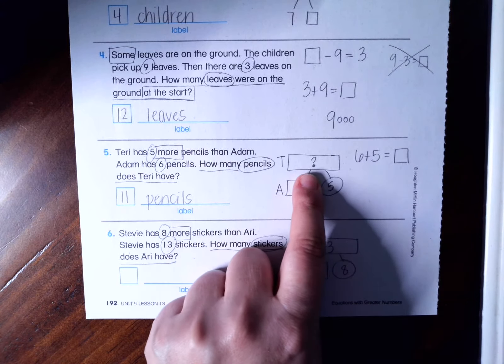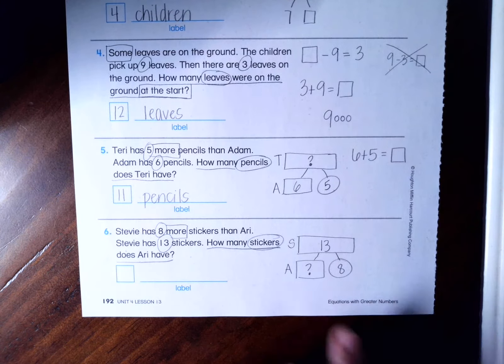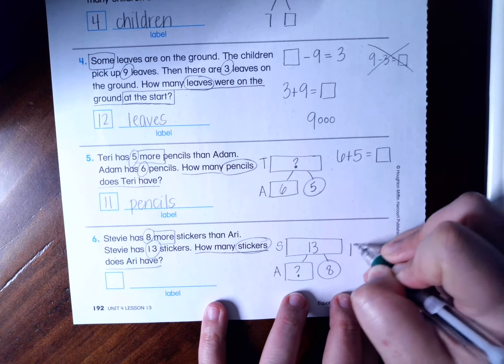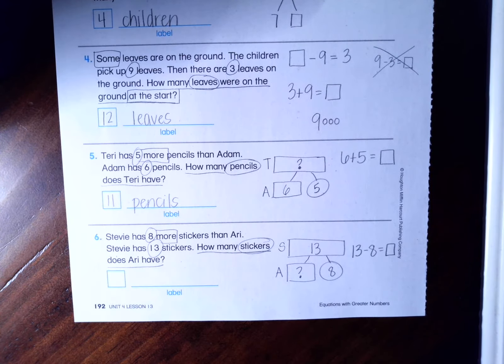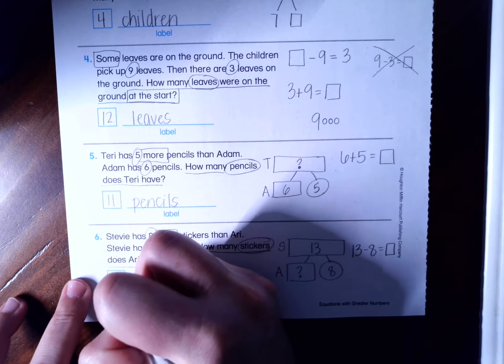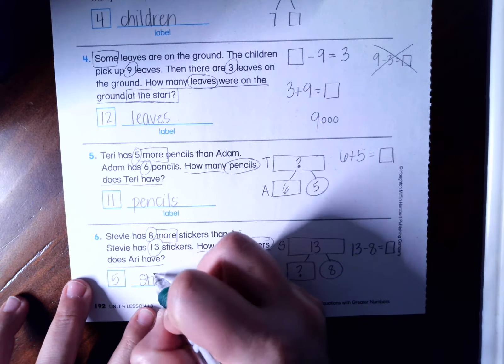So instead of missing a total, now I'm missing a partner. So I'm going to do my subtraction 13 minus eight equals a box. And when you solve that, you should have gotten an answer of five stickers.